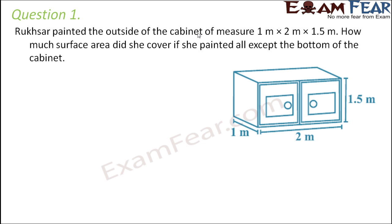Question number one: Rukhsar painted the outside of a cabinet measuring 1 meter by 2 meters by 1.5 meters. How much surface area did she cover if she painted all except the bottom of the cabinet? Basically, we need to find out the total surface area of this cabinet excluding the bottom.